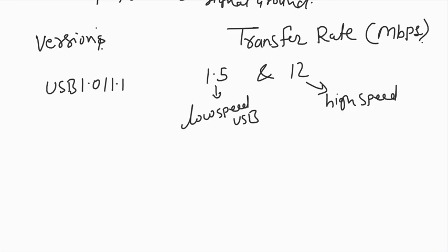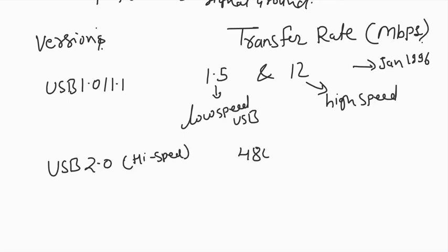So low speed and high speed were defined right from that time. USB 1.1 was released around January 1996. After that came USB 2.0, which also had high speed add-ons, with a speed of 480 Mbps. USB 2.0 started around April 2000 and its standard release was around 2001.